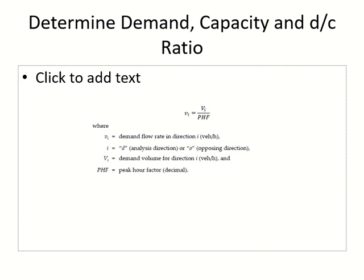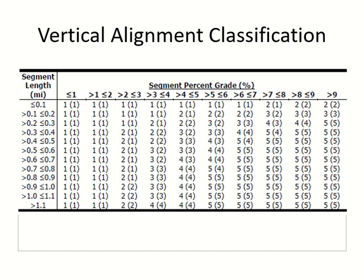Volume must be converted to flow rate by dividing by the peak hour factor, done for both directions. Then compare to the capacity table to find the demand-to-capacity ratio. If demand divided by capacity exceeds 1.0, level of service is F. To find vertical class, use the table with segment length and gradient.